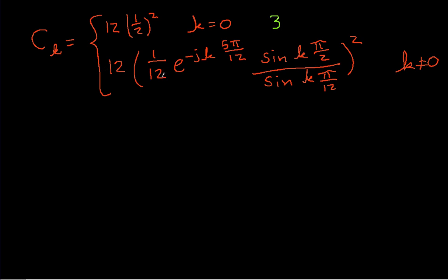So, when we work this out, we'll have 1 over 12 squared, but we'll have a 12 out here, so we'll be left with just 1 over 12. We'll have this term, the complex exponential squared, and if I square a complex exponential, then it's equivalent to multiplying the argument by 2, and then I'll have the sine kπ over 2 over sine kπ over 12, we'll have this quantity squared.